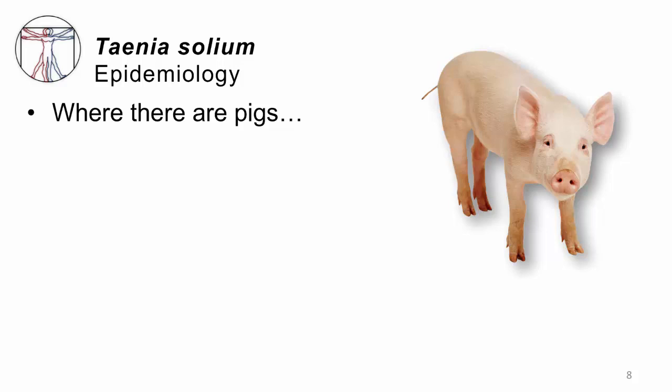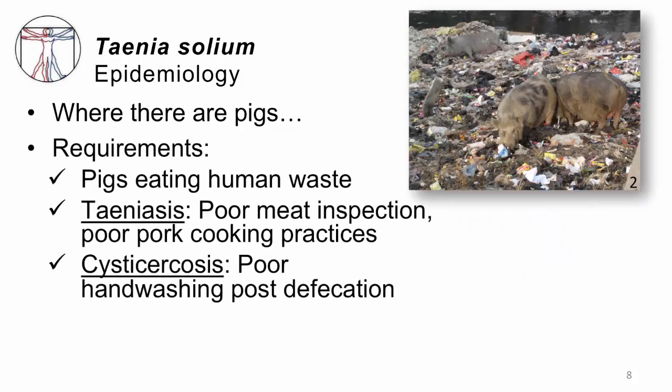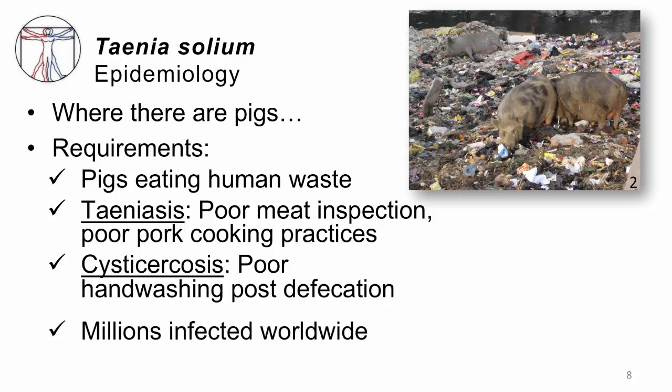For epidemiology, this happens any place where there are pigs — not cute little pink pigs, but pigs that are feasting on human waste. In order to catch teniasis, you need poor meat inspection and poor pork cooking practices. You can actually eat cystic pork as long as you cook it first and inactivate those cysts. In the case of cysticercosis, the problem isn't with the pigs, it's with people who are not washing their hands after they defecate and contaminate food they're preparing. There are millions of people with either teniasis or cysticercosis worldwide.